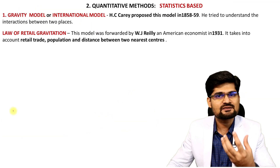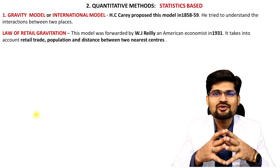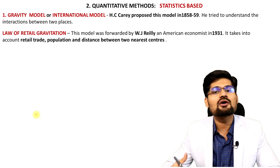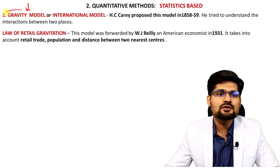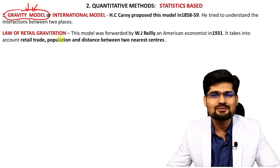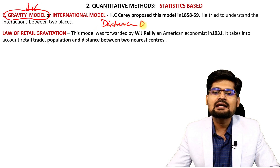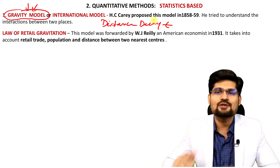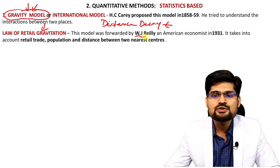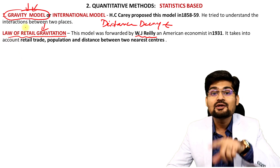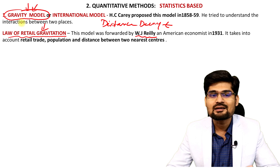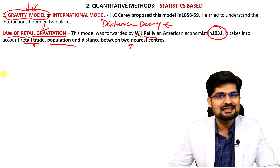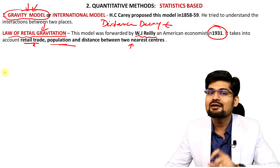The quantitative method uses statistical analysis, which has been a very important tool for research scholars. The most important and widely used model was the gravity model — also called the interaction model — based on distance decay analysis, where services decay with distance from the urban area. W.J. Raleigh's law of retail gravitation, classified in 1931, used variables of retail trade, population, and distance between two nearest centers to map the urban umland or sphere of influence.